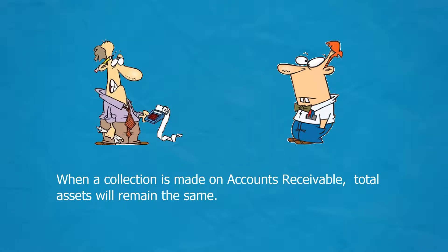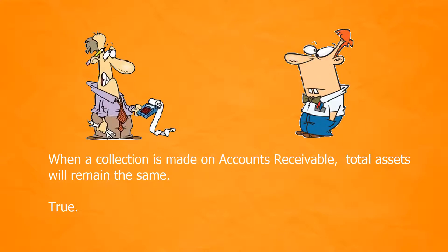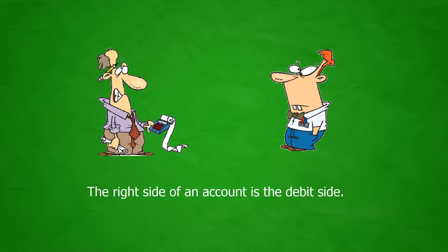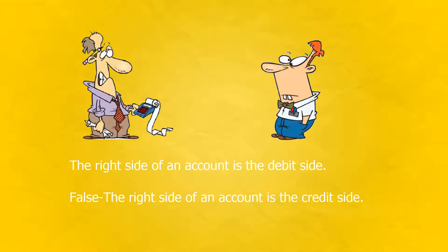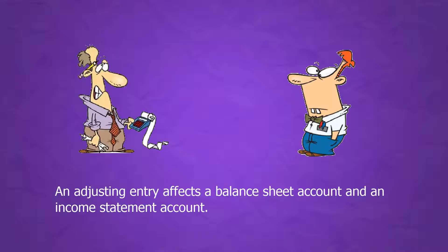When a collection is made on accounts receivable, total assets will remain the same. True. The right side of an account is the debit side. False. The right side of an account is the credit side.